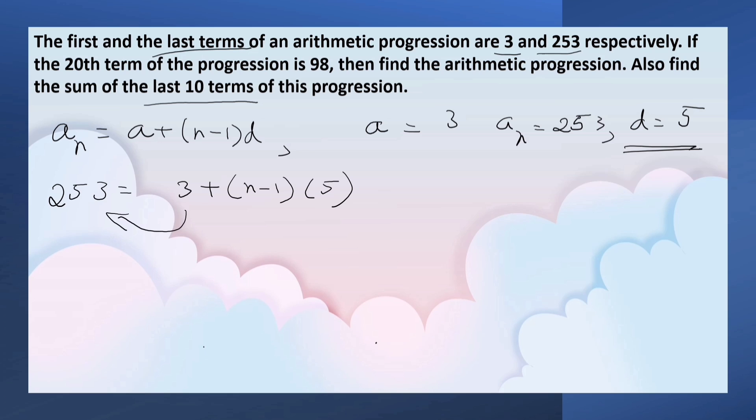Transpose 3 to this side: 253 minus 3 equals 250, which equals N minus 1 times 5. So N minus 1 equals 250 by 5, that is 50. Therefore N equals 50 plus 1, which is 51.